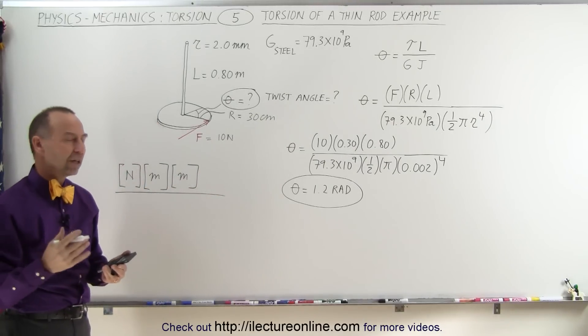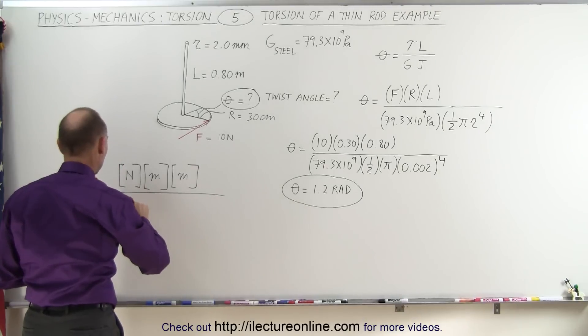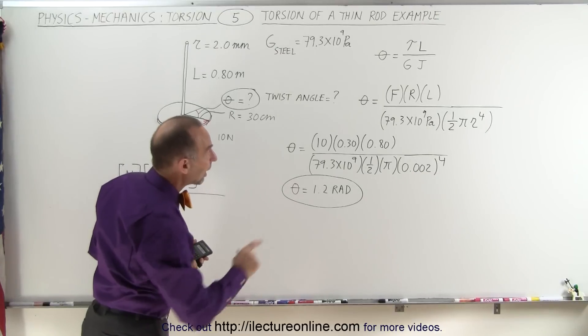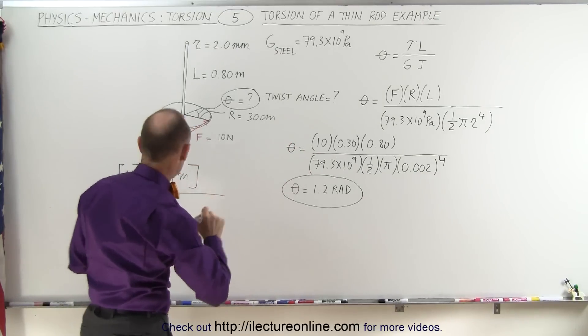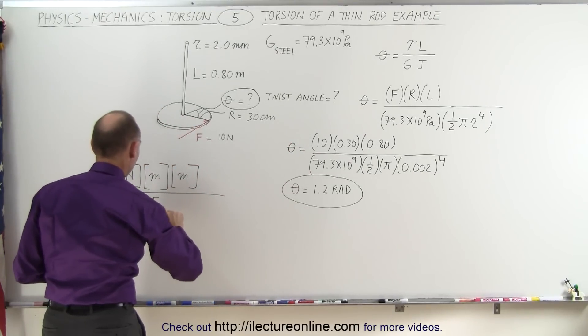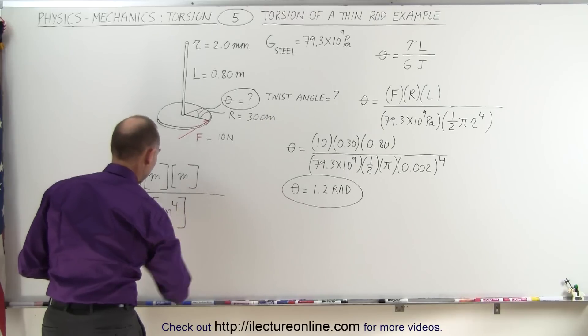we have pascals. Now pascals is newtons per meter squared. And we have radius to the fourth power, that would be meters to the fourth power.